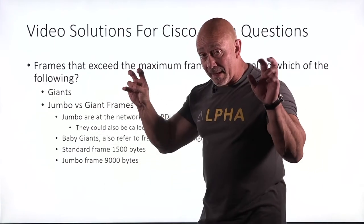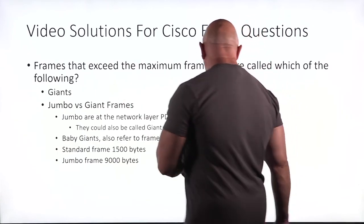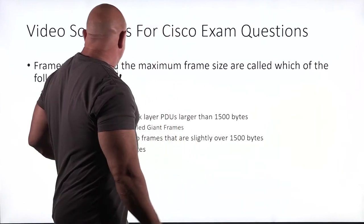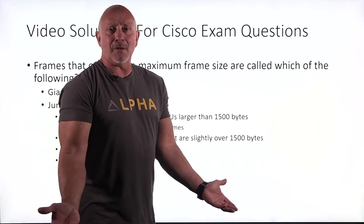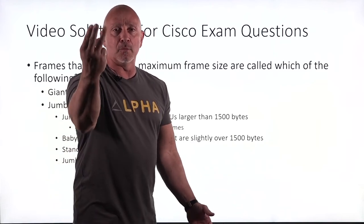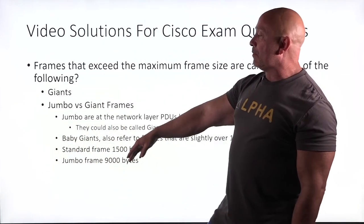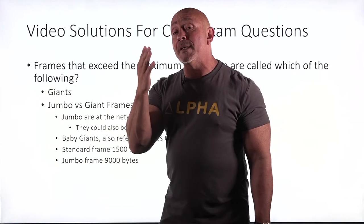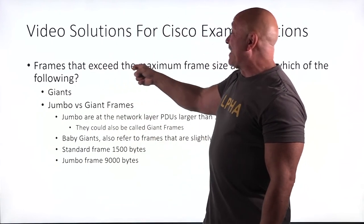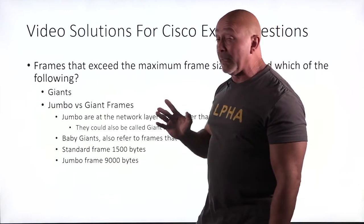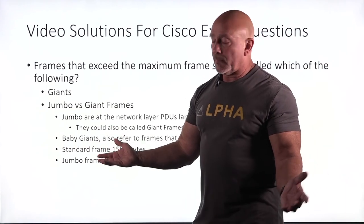They have different names — semantics. There's really no hard line, because Baby Giants are defined as 'slightly over' — slightly over by how much, by one, by two, by thirty? There are many names, but based on your multiple choice answers, frames that exceed the maximum default frame size of 1500 are called Giants.